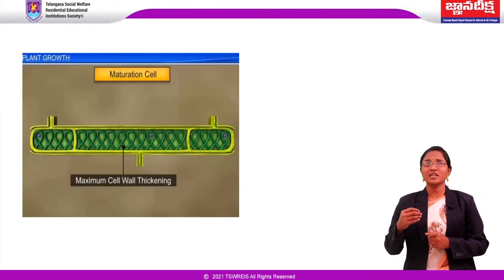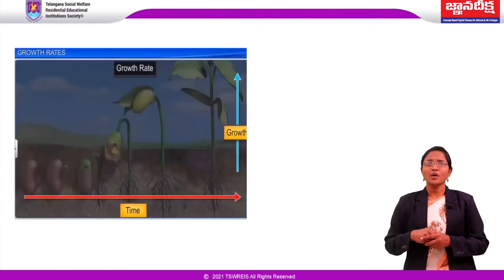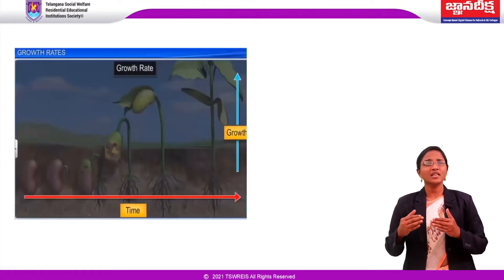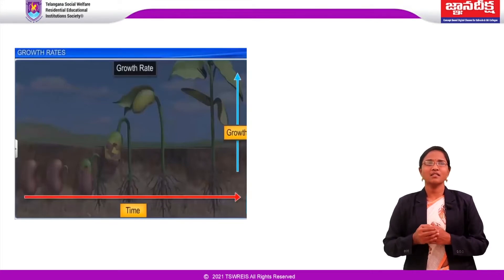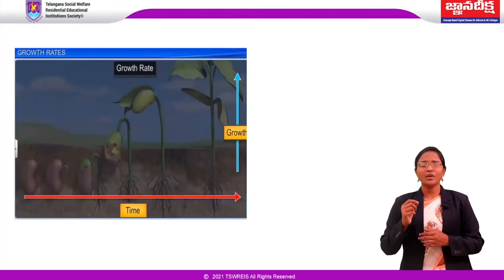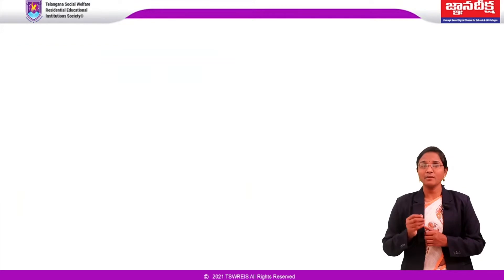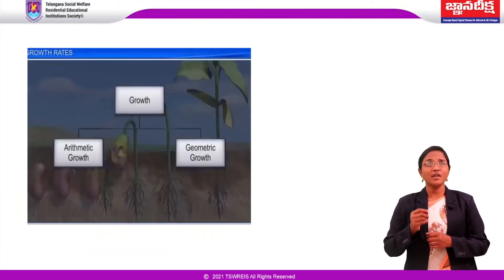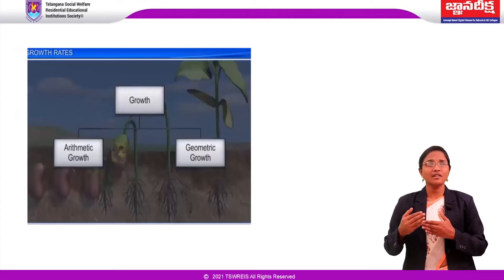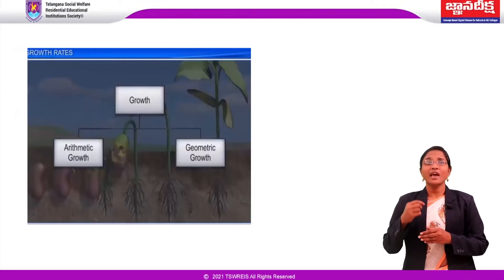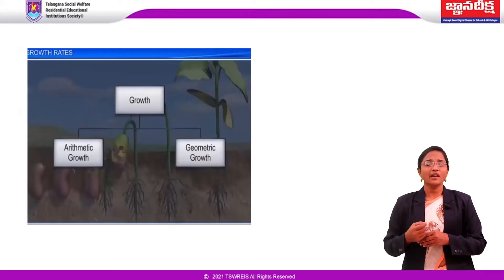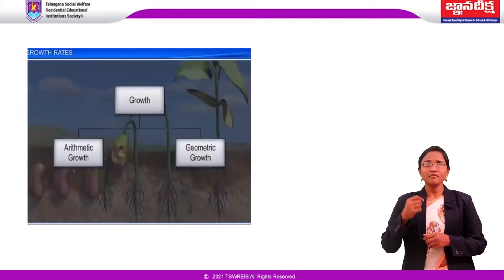We will discuss growth rates. The increased growth per unit time is called the growth rate, and it can be expressed mathematically. An organism or a part of the organism can produce more cells in a variety of ways. The growth rate shows an increase that may be arithmetic or geometrical.